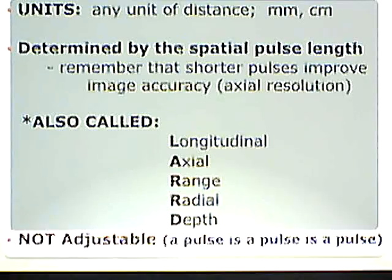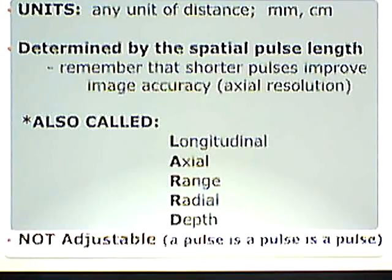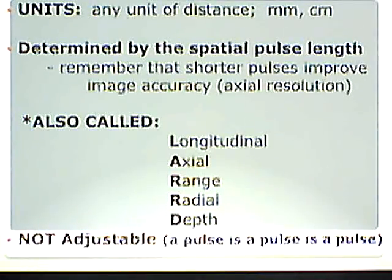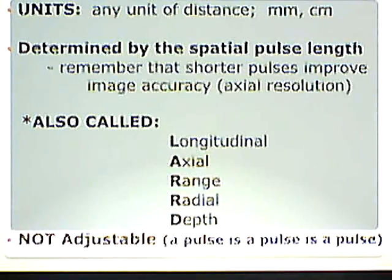The units for axial resolution are a distance — millimeters, centimeters — because it is that minimum distance two structures can be from each other and still be seen as two separate objects. It is determined by the spatial pulse length. Remember, we talked about how shorter pulses improve image accuracy, so it makes sense that spatial pulse length determines axial resolution.